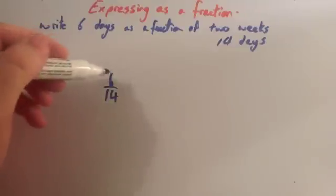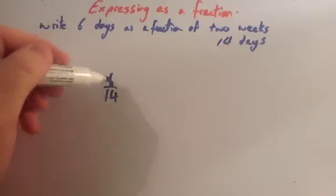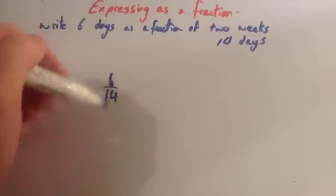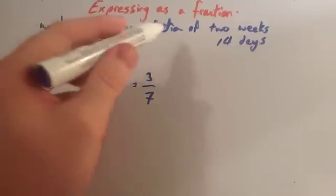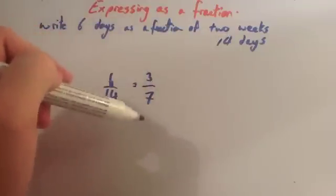Again, try and cancel this down if possible. 6 out of 14, well, they're both divisible by 2. So let's divide them both by 2. So you get 3 over 7. So 6 days as a fraction of 2 weeks is 3 sevenths.